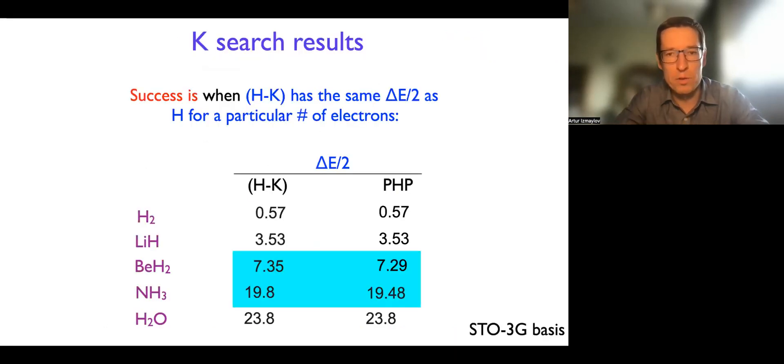Now, what would we call a successful search for K? Success would look like if H minus K has the spectral range the same as if we work just with the right number of electrons, right? So if we project the Hamiltonian to the right number of electron block and look at the spectral range only there, then that's absolutely the best result you can get through subtracting K.